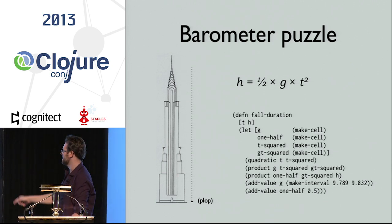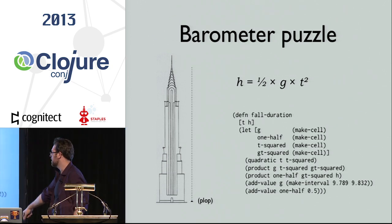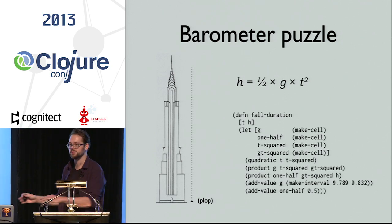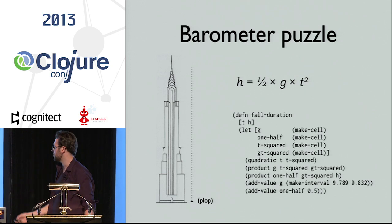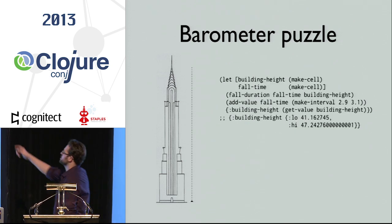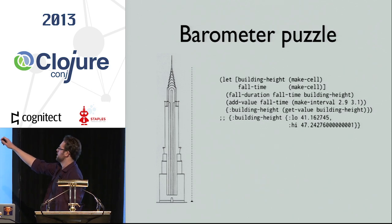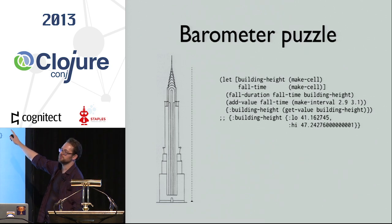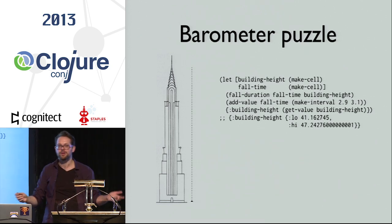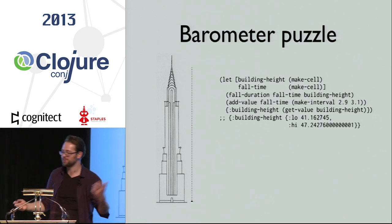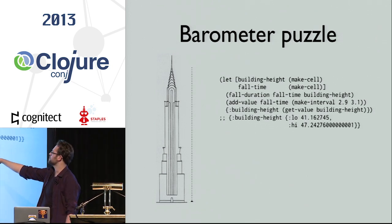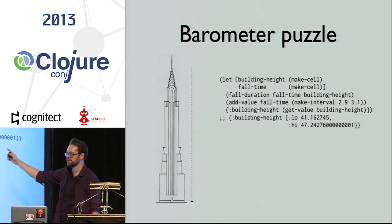We make cells for our building height and fall time and set up the relationship by calling our function — it's just functions, nothing special. We measure the fall time to be somewhere between 2.9 and 3.1 seconds because we're not that accurate, we just have a stopwatch. We put intervals in, we get intervals out. We get the answer that the building is somewhere between 41 and 47 meters tall.